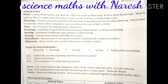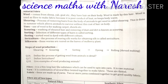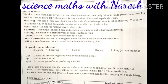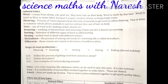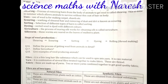The next topic is sericulture. The process of rearing silkworms for obtaining silk is called sericulture. Sericulture involves rearing silkworms on the mulberry plant — the silkworms are raised on the leaves of the mulberry plant.